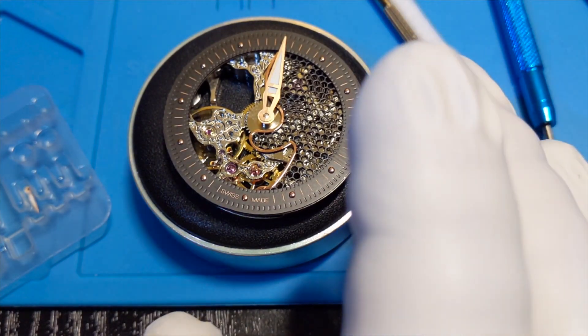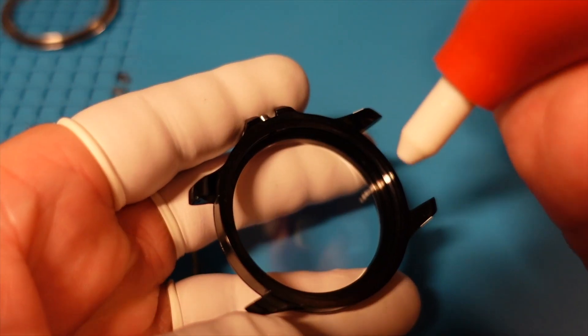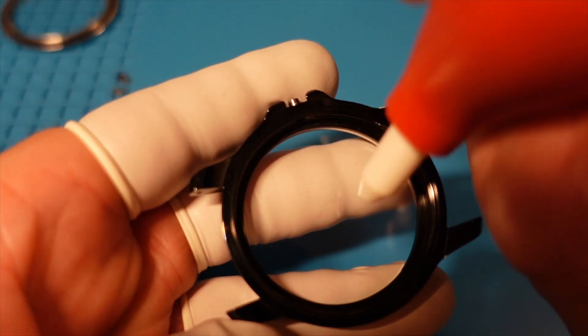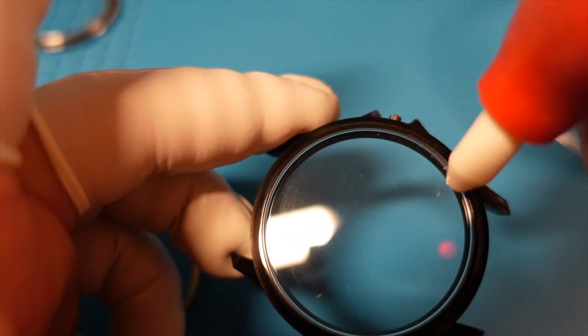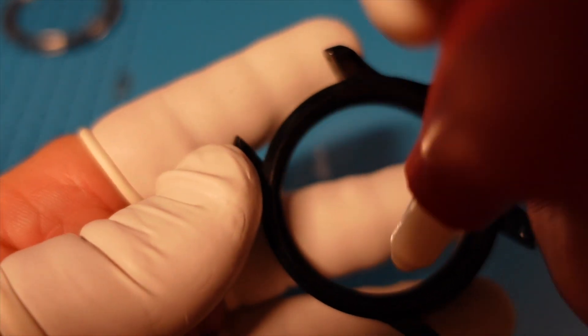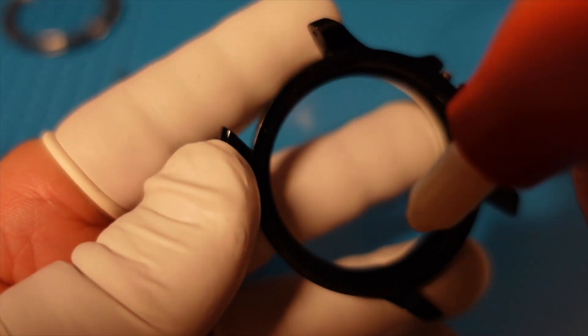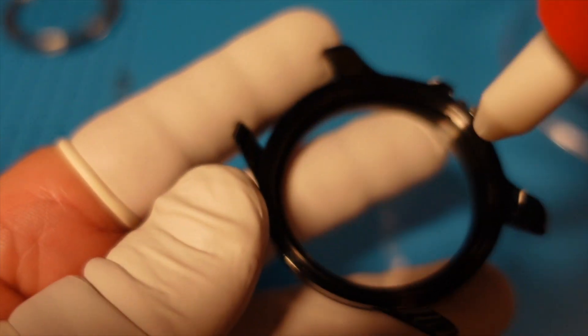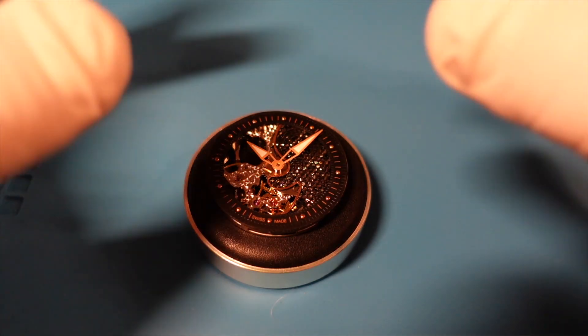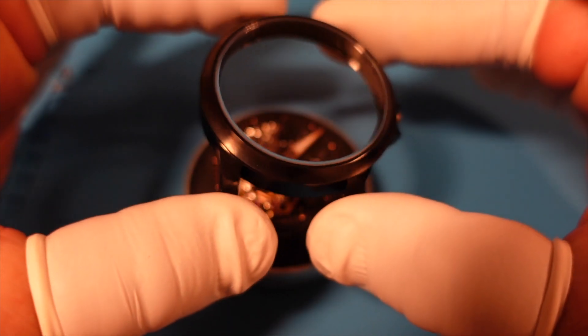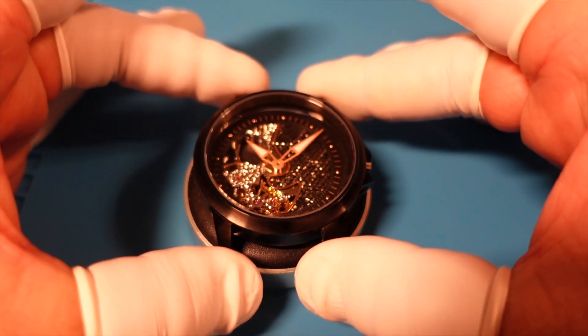Now, before casing the movement, I give it a thorough clean with Rodico and the rubber blower to eliminate any lint or dust particles. Trust me, dust will find its way into the movement or the dial on the crystal if you're not careful in this step.